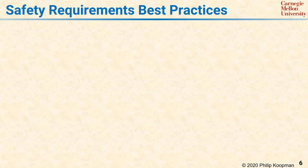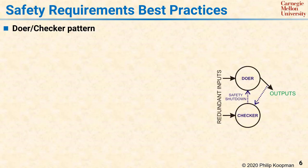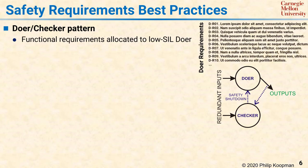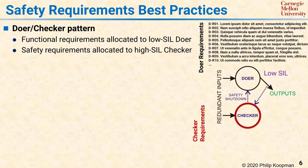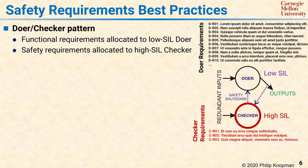A best practice for building safety critical systems is to use the doer-checker architectural pattern. Allocate the main functional requirements to a low SIL doer and allocate safety requirements to a high SIL checker. An example of this might be a speed limit for a vehicle. The doer can deal with providing smooth acceleration, optimizing fuel consumption, and so on. And the checker can simply be watching to make sure that the maximum safe speed for the vehicle is not exceeded. The doer can do whatever it wants as long as it does not violate the speed limit, and the checker is there to keep things safe. Using this pattern often requires rethinking the notion of safety to create a safety envelope approach. However, this rethinking pays off by reducing the scope of how much of the system must be developed to high SIL levels of engineering rigor.